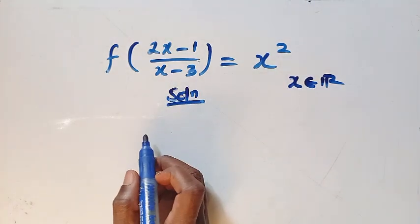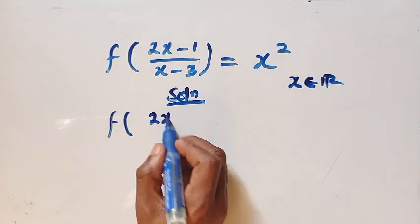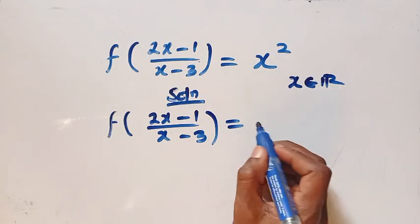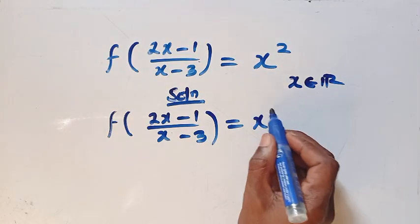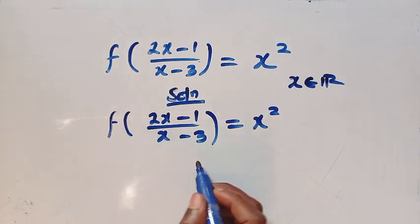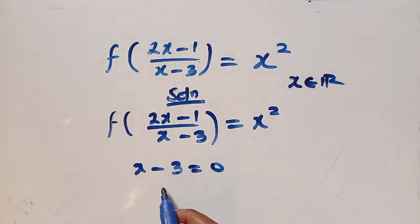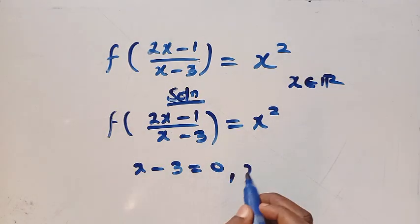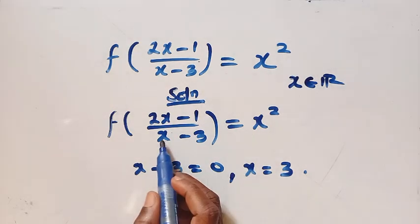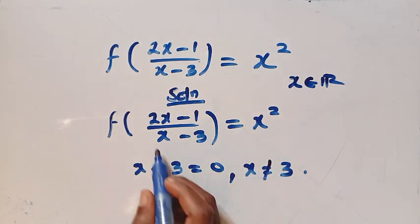Let's consider the solutions. From the given equation we have f of (2x minus 1) divided by (x minus 3) equals x to the power of 2. Suppose we let x minus 3 equals 0 — from here we have x equals 3. Any time x equals 3, this function is not valid.